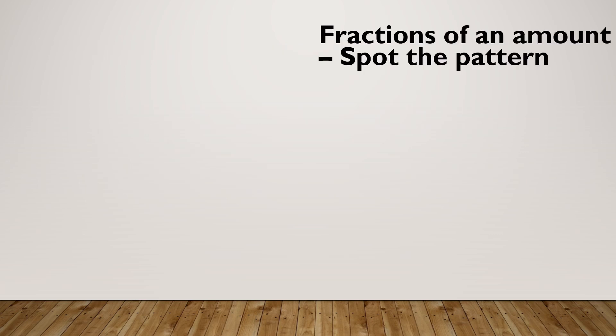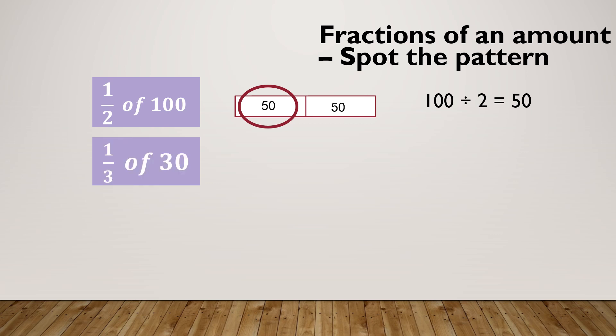When we're working out fractions of an amount, there's a specific way that we can do this. So half of a hundred. I want a hundred split into two equal bits and I've got one of those. So I'm doing a hundred divided by two, which gives me 50. If I was doing a third of 30, I'm splitting 30 into three equal bits and I'm getting one of those. So I'm doing 30 divided by three equals 10.